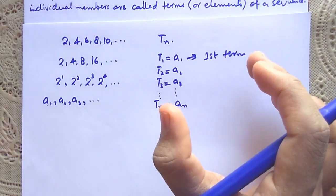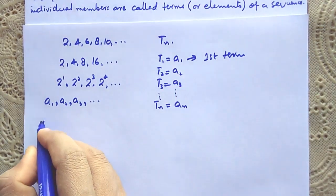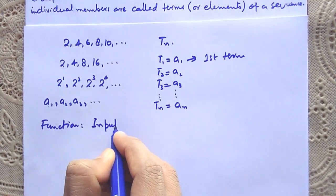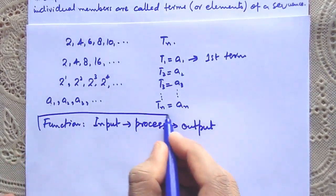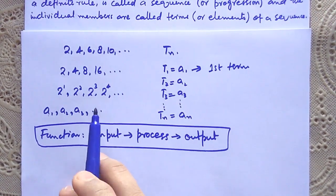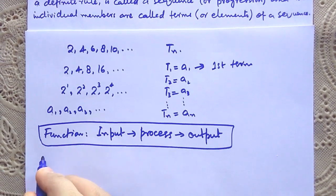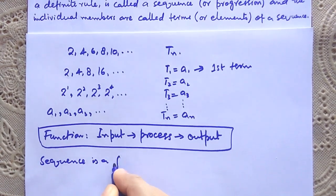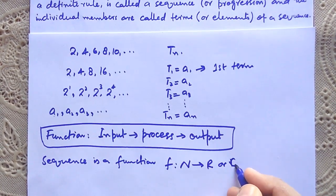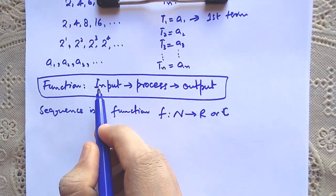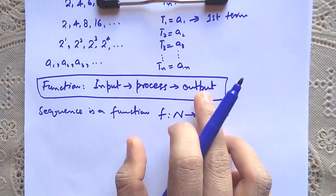We can also visualize the concept of a sequence in terms of a function. A function has an input, a process, and an output. A sequence is a function f from the natural numbers to the real or complex numbers. So a sequence is a function whose domain — that is, the input — is the natural numbers, and the output will always be real or complex numbers.